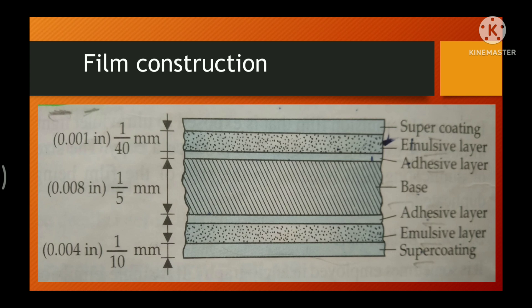Between the emulsion and the base is a thin coating material called the adhesive layer, also known as the subbing layer. It helps to ensure uniform adhesion of emulsion to the base — it attracts the emulsion layer to the base. Another layer is the supercoating: the emulsion is covered by a protective covering of gelatin called supercoating, which protects the emulsion from scratching, pressure, or contamination during use and processing.